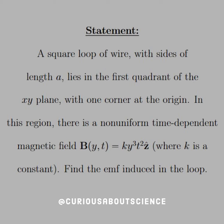A square loop of wire with sides of length A lies inside the first quadrant of the XY plane, with one corner at the origin. In this region there is a non-uniform time-dependent magnetic field B(y,t) equals KY cubed T squared in the Z-hat direction, where K is a constant. Find the EMF induced in the loop.